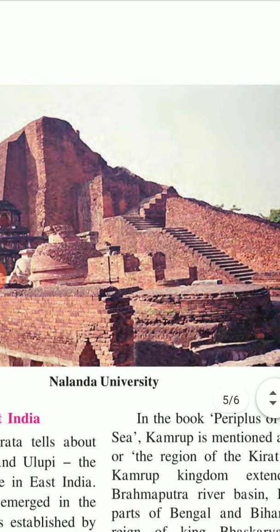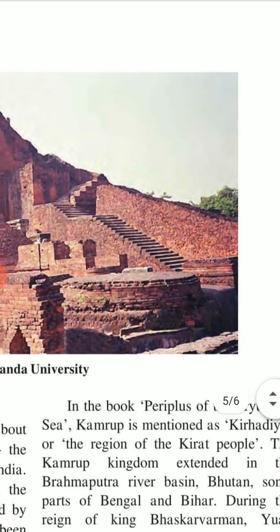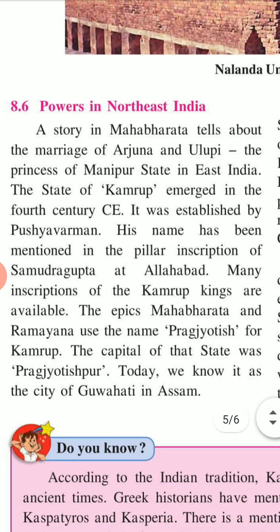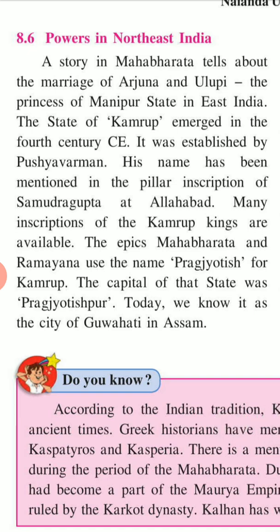Powers in Northeast India: A story in the Mahabharata tells about the marriage of Arjuna and Ulupi, the princess of Manipur, with the state of Kamrupa. Kamrupa emerged in the 4th century CE and was established by the Varmana dynasty. Its name is mentioned in the pillar inscription of Samudragupta at Allahabad. The capital of that state was Pragjyotishpur. Today it is known as the city of Guwahati in Assam.